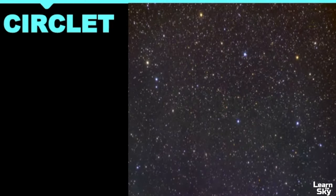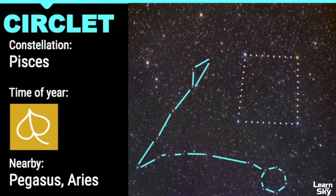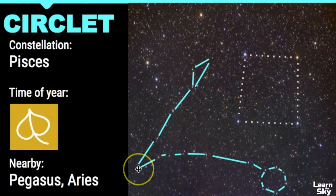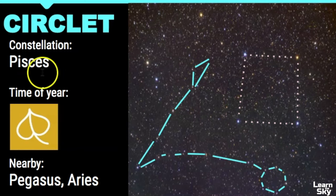Our next autumn asterism is called the Circlet, and it's part of the constellation of Pisces. In this photograph we have the Great Square of Pegasus, Aries, Pisces, and a part of Andromeda as well. First you want to find that Great Square of Pegasus, then right underneath there is a small little circle of stars — that is the Circlet which makes up Pisces. The Circlet is right down here and that's part of the head of Pisces. Pisces can be a difficult constellation to find because many of its stars are fairly dim, so the way to find it is to first find the Great Square and then look for the Circlet that's really nearby.